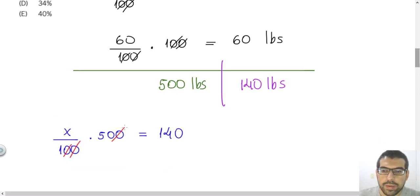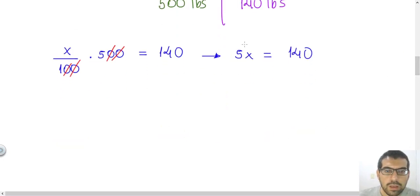We can find the answer just solving this equation. Again, I will cancel the zeros, and I will have x times 5, that will be 5x, equal to 140. Then, once this 5 is multiplying the x, in order to find the x, I just need to send this 5 to the right side of the equation. And the 5 will do the opposite of multiplication, that will be division. So I will have 140 divided by 5. So let's divide 140 by 5.